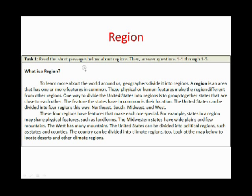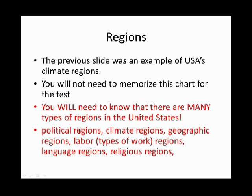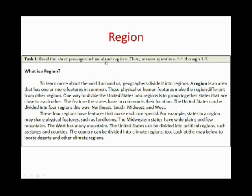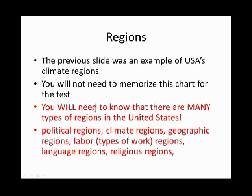Let's start by defining a region. A region is an area that has one or more features in common, and it could be broken down into two categories. It could be physical, or it could be human features that make a region. Remember, anything that is read in these PowerPoints you have to know for the test. So these are different types of regions.